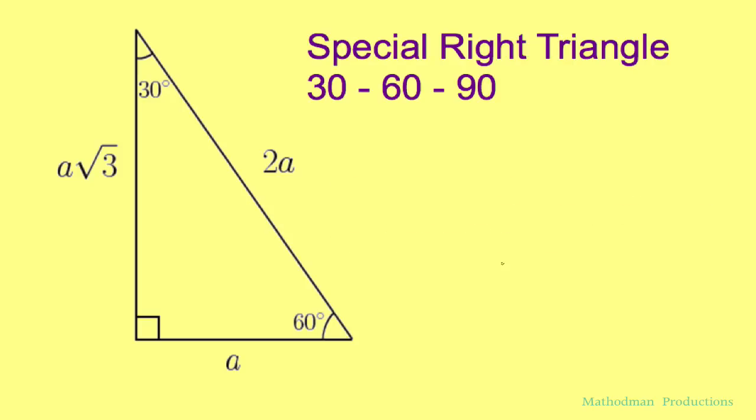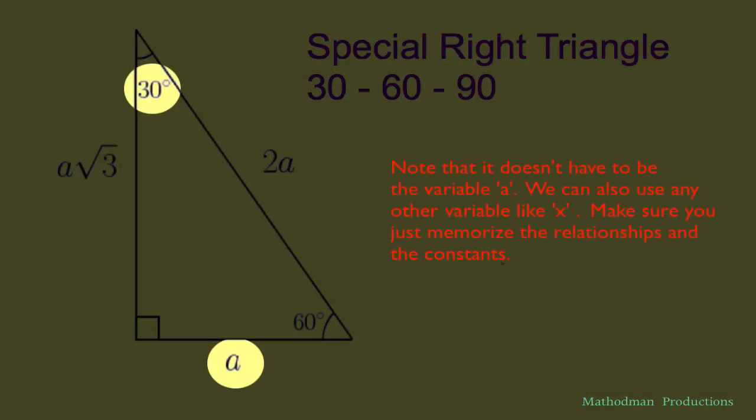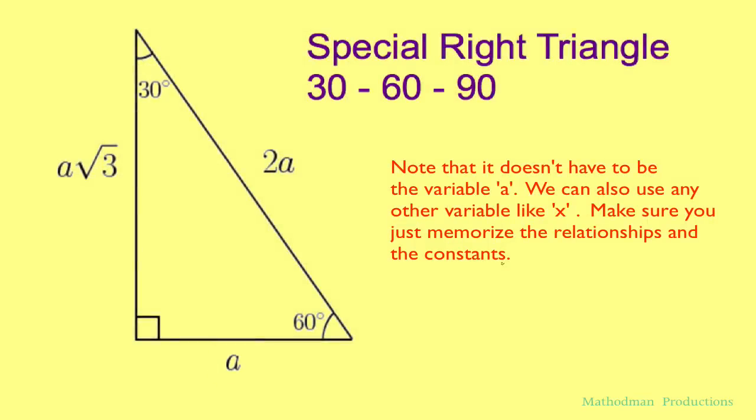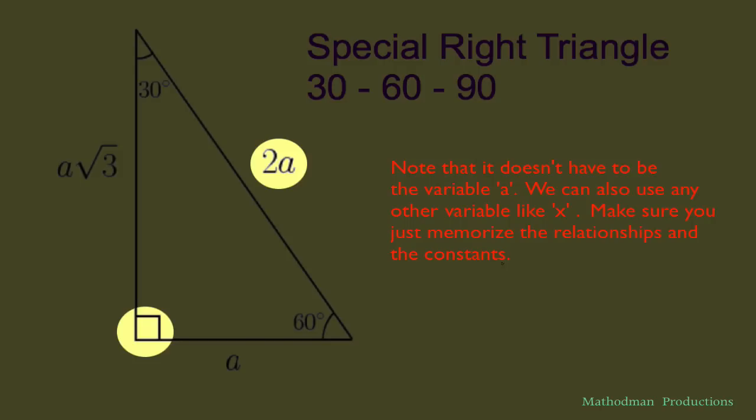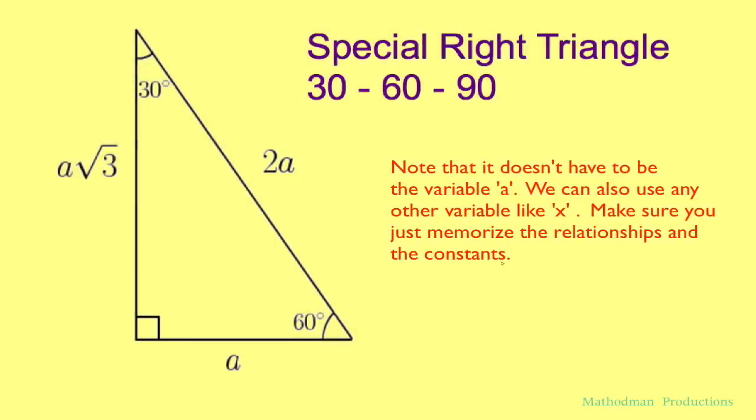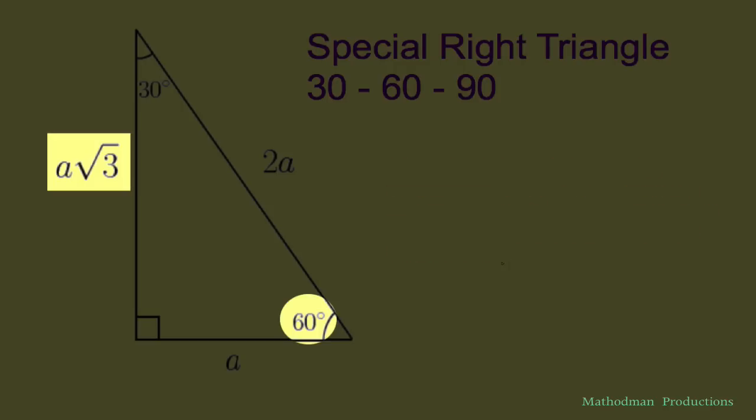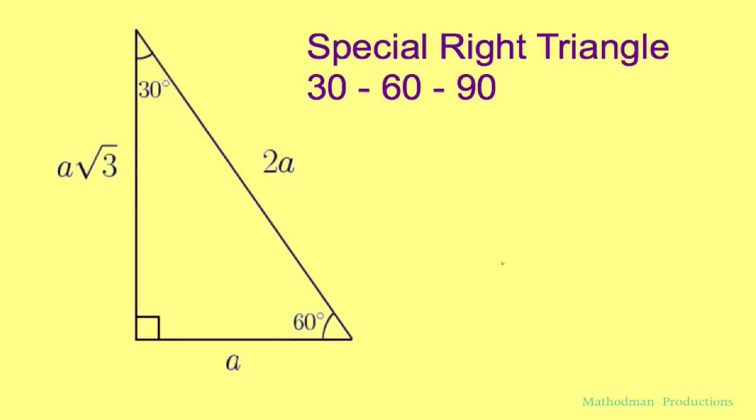Across the 30 degree measurement we'll say that that's a value of a. The one across 90 is twice a, so whatever a is times 2, and the one across 60 is a times the square root of 3.